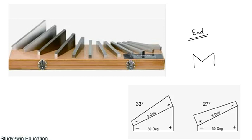Suppose we have a V block and we wish to measure angle theta. We can make use of angle gauges and measure that angle. We have to build a block of angle gauges using different angle gauges from the box. There can be different sets available, but we are going to discuss a 13-piece angle gauge set. Each angle gauge has a different angle theta.